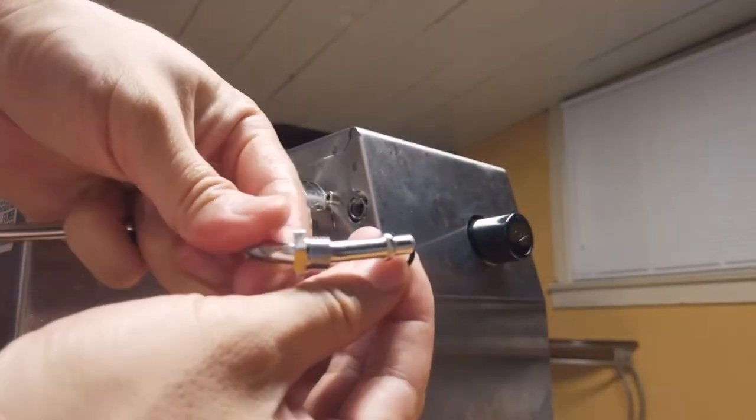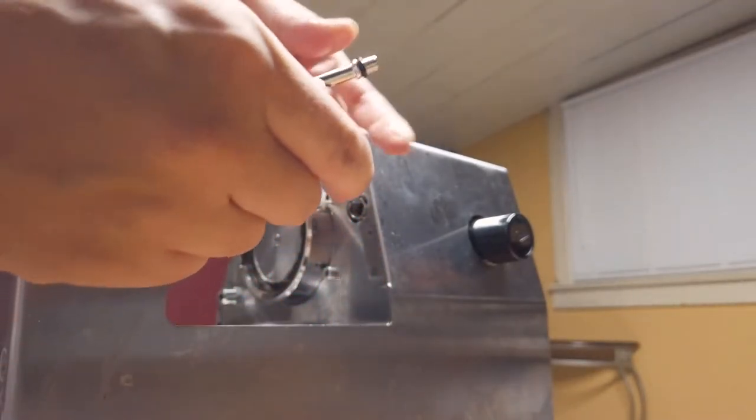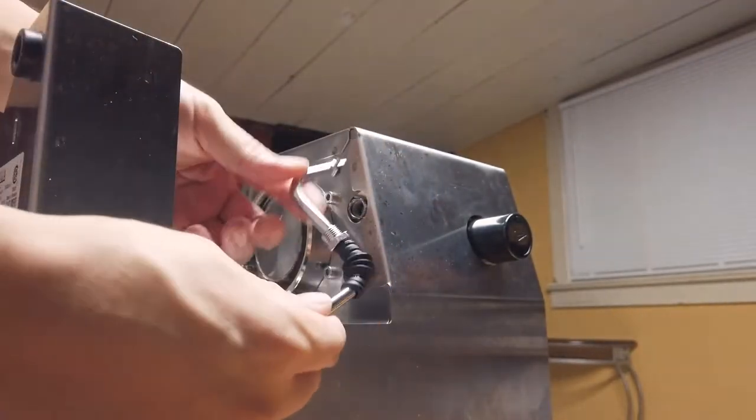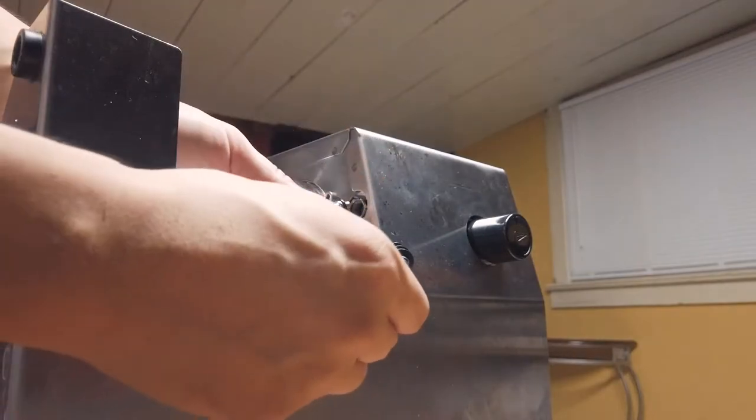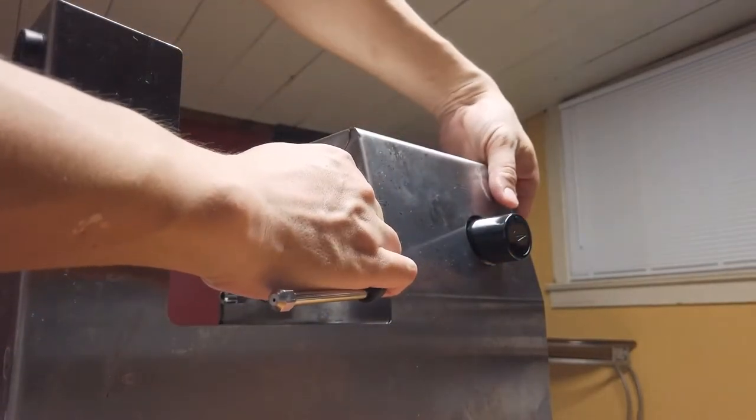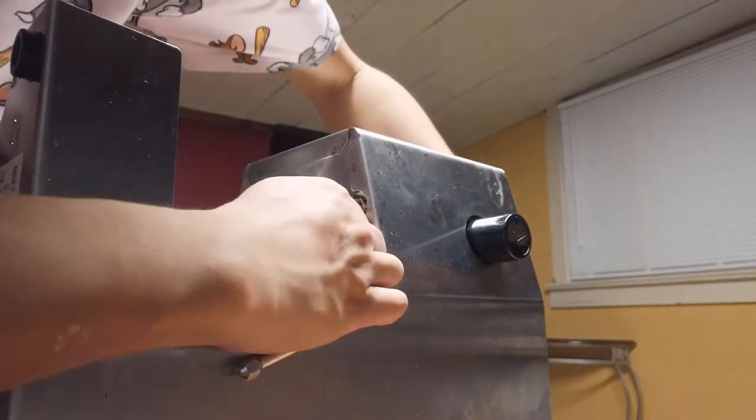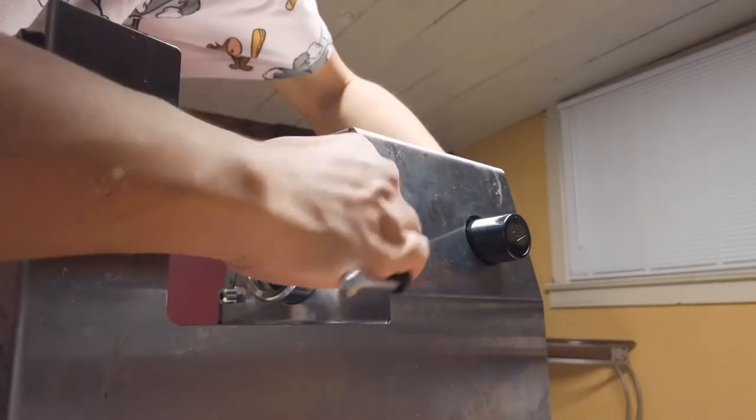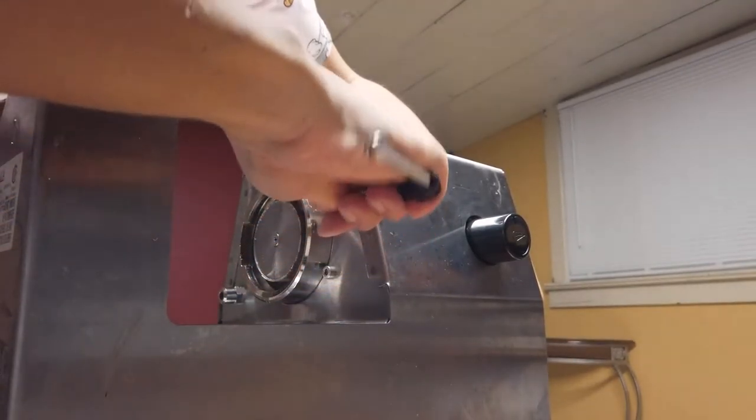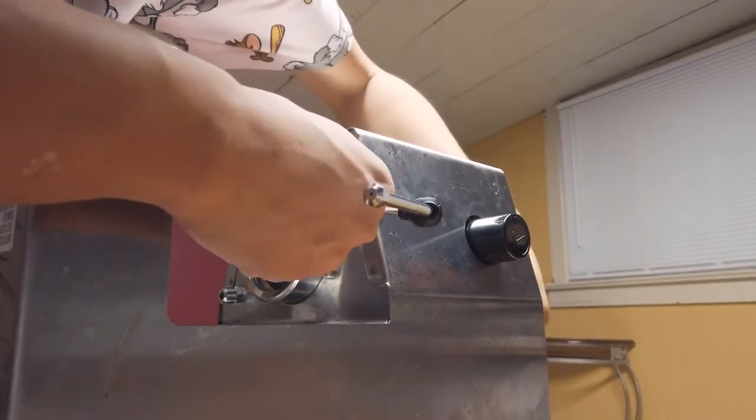I'm going to go ahead and put the o-ring on the Rancilio wand. The o-ring is in there and we're going to gently push it back in, make sure it's nice and snug. Seems to be good.